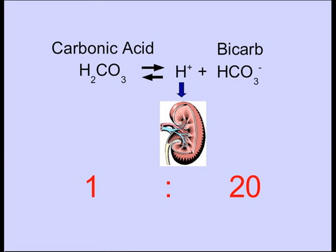The carbonic acid then dissociates into hydrogen ions and bicarb. The kidney does the job of maintaining a circulating level of bicarb that is 20 times what carbonic acid is. That's the kidney's job.